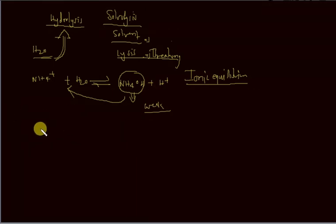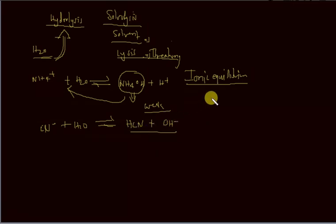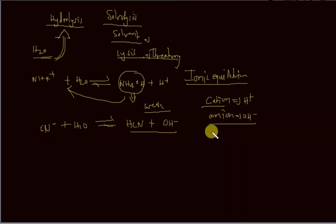In the same way, an anion also undergoes hydrolysis. Taking the anion cyanide (CN-) as an example, it will form a weak acid HCN along with a base OH-. Always keep in mind: the cation undergoes hydrolysis to give H+ ions, and the anion always gives OH- ions.